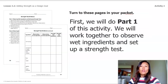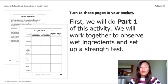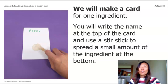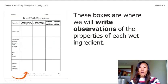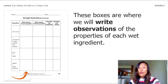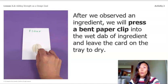Turn to these pages in your packet. In part one we will work together to observe wet ingredients and set up a strength test. We'll make a card for each ingredient — write the name at the top and use a stir stick to spread a small amount at the bottom. Make observations using your eyes only; do not touch or taste any ingredients. Focus on the important glue properties such as how sticky it is or how easily it spreads.